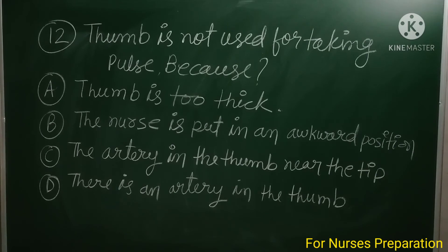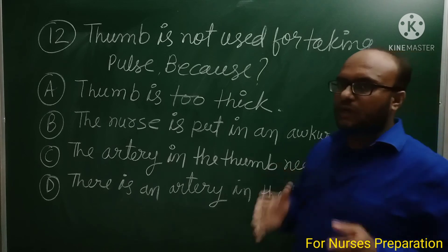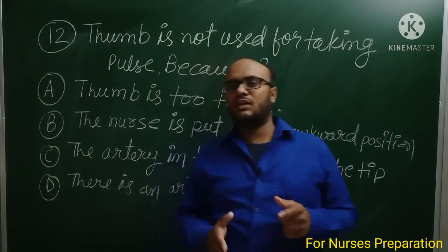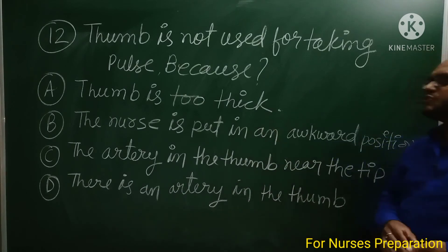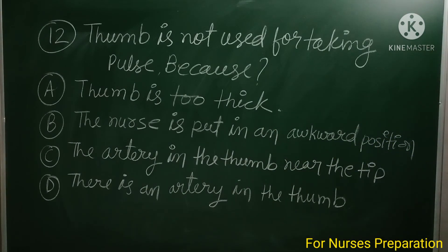Question number 12: Thumb is not used for taking pulse because — Option A: Thumb is too thick, Option B: The nurse is put in an awkward position, Option C: The artery in the thumb is near the tip, Option D: There is an artery in the thumb.